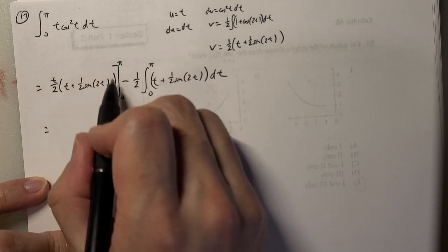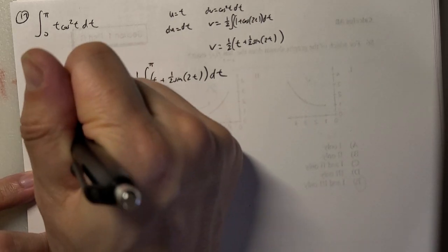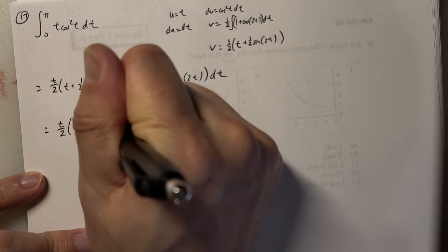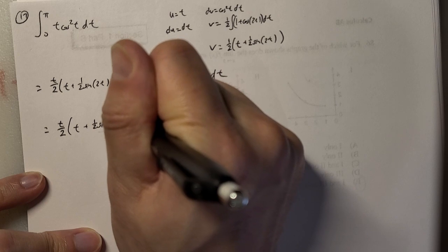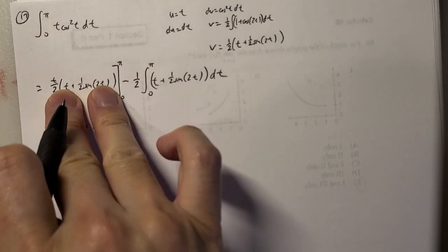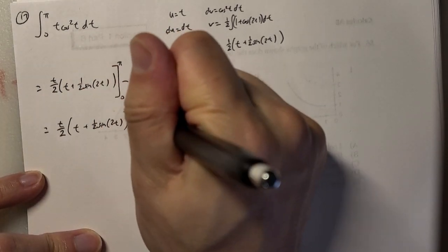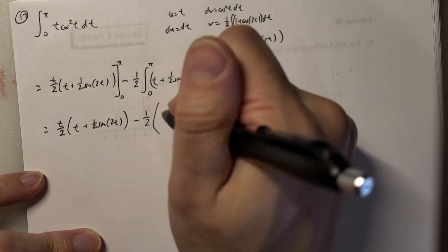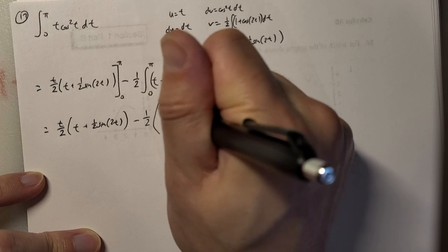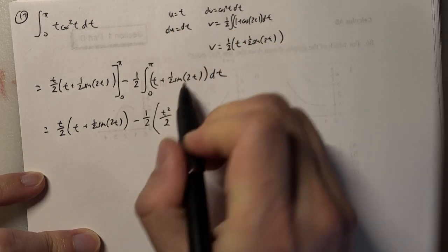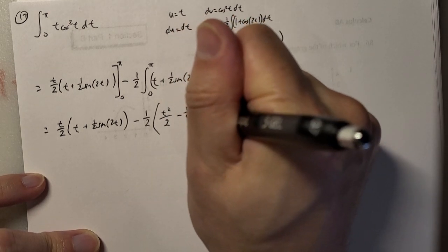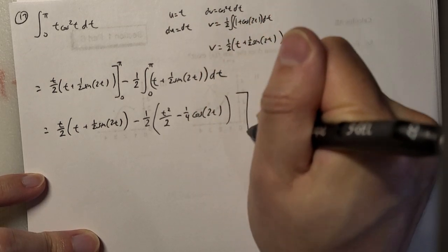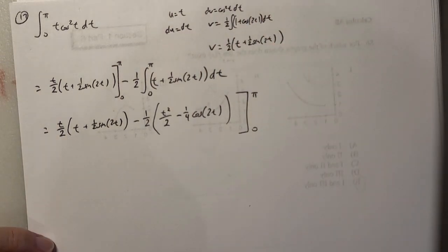I'm going to evaluate everything at the end together. So we write: t/2 · (t + ½ sin(2t)) — that's the uv term. Then minus ½, with big parentheses, of [t²/2 minus ¼ cos(2t)]. We're going to evaluate this whole thing from 0 to π.